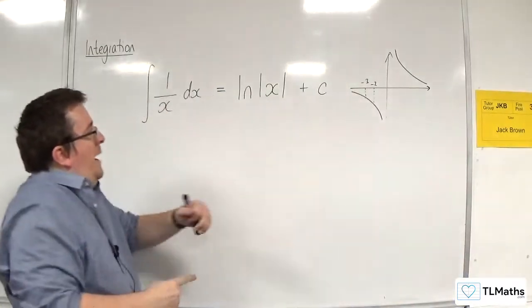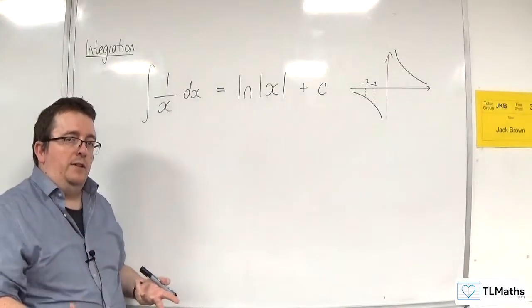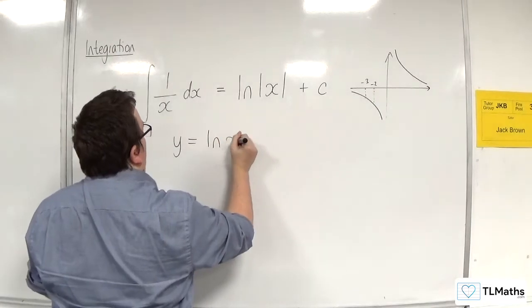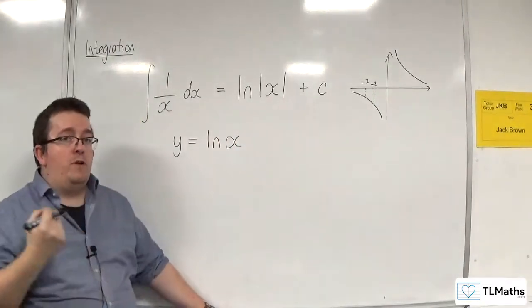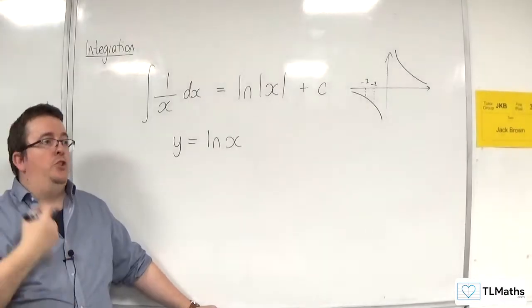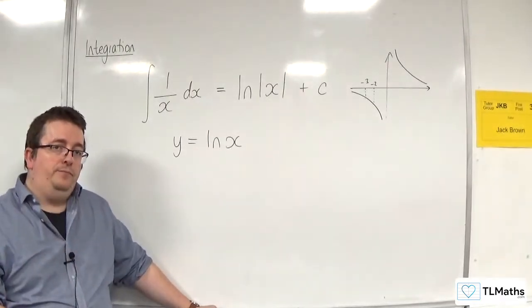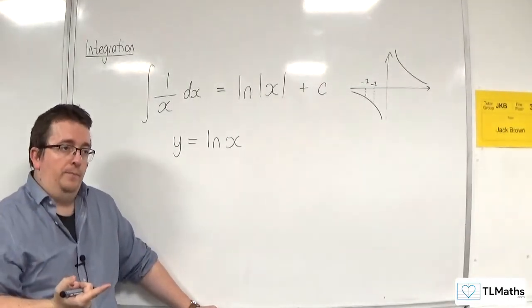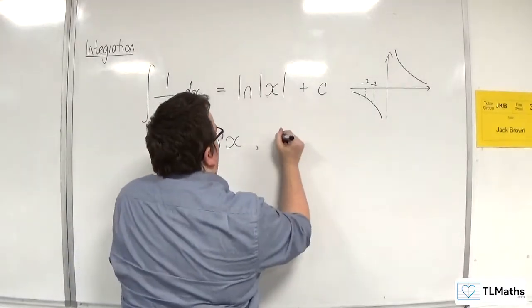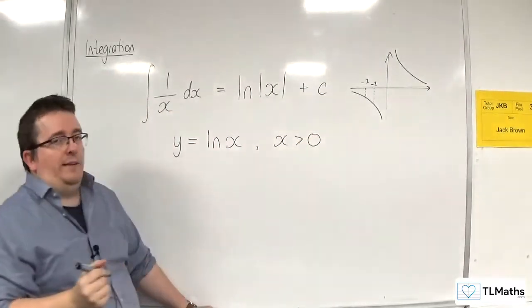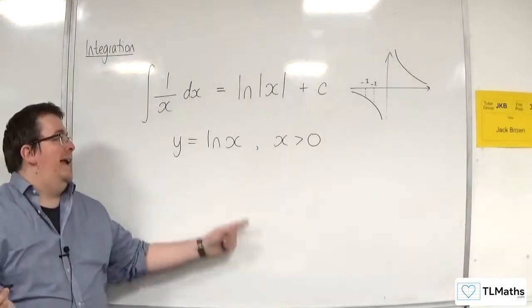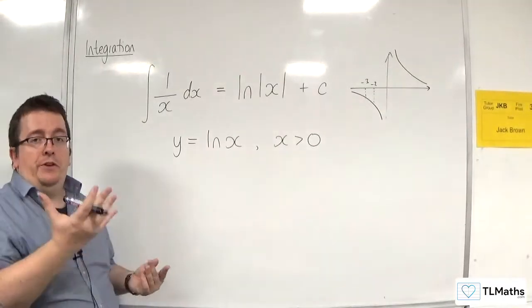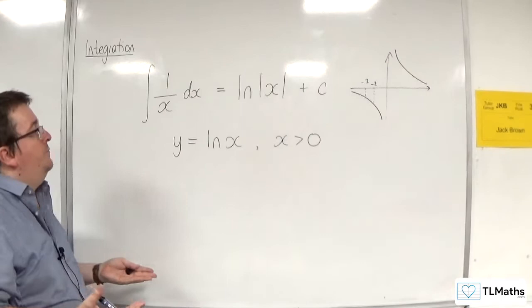Now, the way to show that this result is correct is actually by starting with y equals the natural log of x and differentiating this to show that you get 1 over x. But of course, when I write that down, y equals the natural log of x, although I might not explicitly state it, x has to be greater than 0 in order for that function to exist, because I can't take the log of 0 or a negative value.